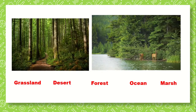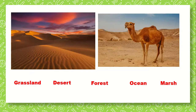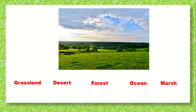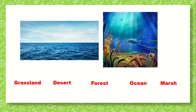Now let's play a game. What do you see in the picture? Is it a grassland, desert, forest, ocean, or marsh? It's a forest. Correct. Next, what do you see in the picture? It's a desert. Correct. Next — marsh. Correct. Next — a grassland. Correct. What do you see in this picture? An ocean. Correct.